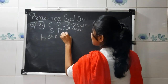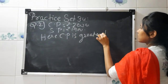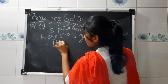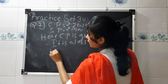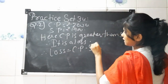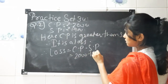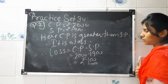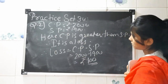Since cost price is greater than selling price, therefore it is a loss. The formula for loss is cost price minus selling price, which is rupees 2000 minus rupees 1900, giving us rupees 100. So the loss is rupees 100.